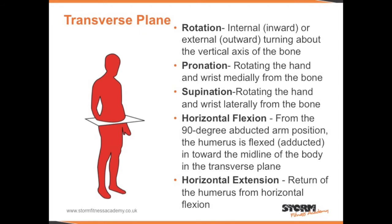These joint movements occur in the transverse plane: rotation, which can be internal or external; pronation, rotating the hand and wrist medially from the bone; supination, rotating the hand and wrist laterally from the bone; horizontal flexion, where from the 90-degree abducted arm position the humerus is flexed in toward the midline of the body in the transverse plane; and horizontal extension, the return of the humerus from horizontal flexion.